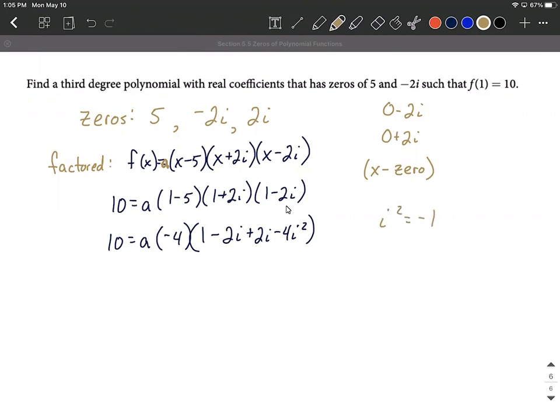So here's where we need to be careful that whenever you see an i squared, that's equal to negative 1. All right, we can also go ahead and as we're simplifying this down, we have positive 2i and subtracting 2i. So these basically like terms get to cancel each other out. Bringing the rest of it down here, we have 10 equals a times negative 4. And then we have 1 minus 4 times replacing the i squared with negative 1.